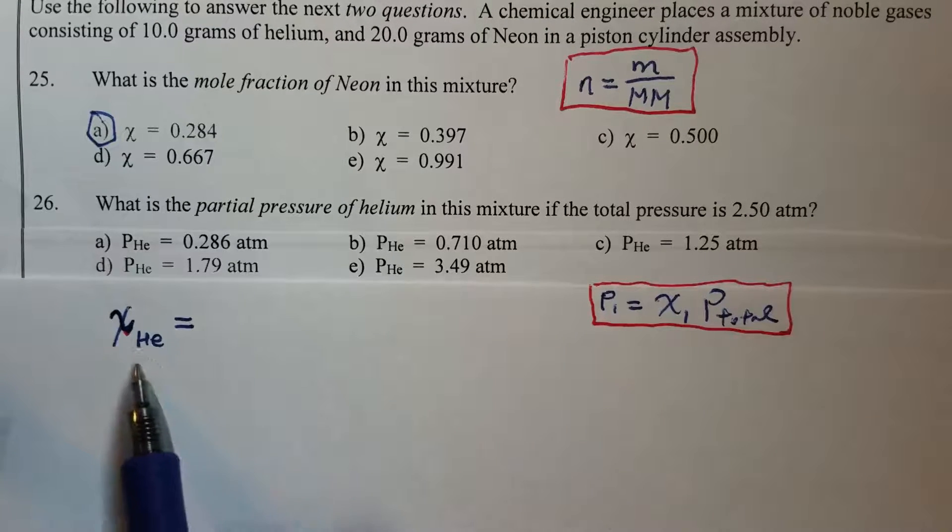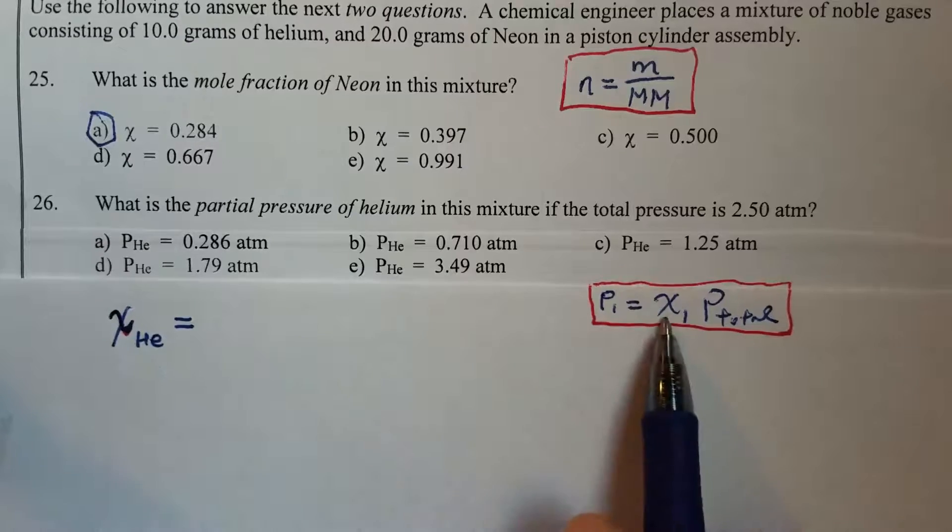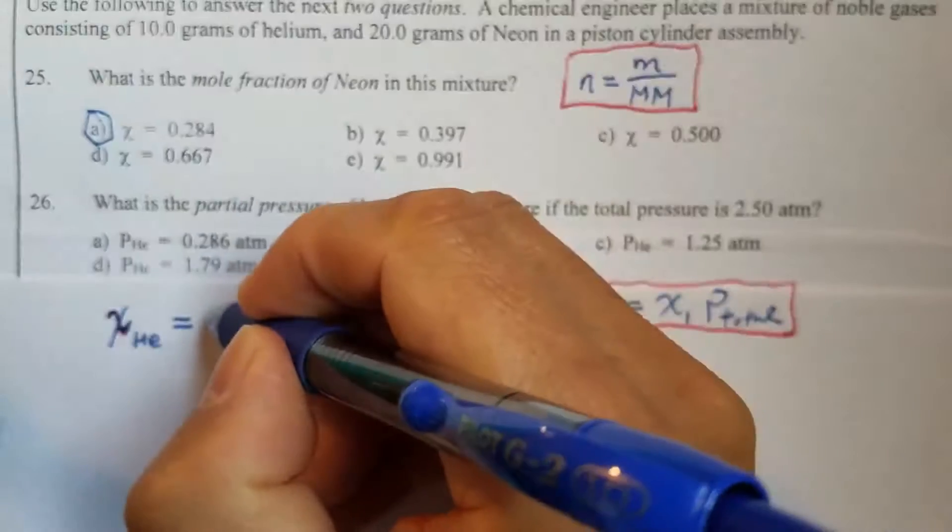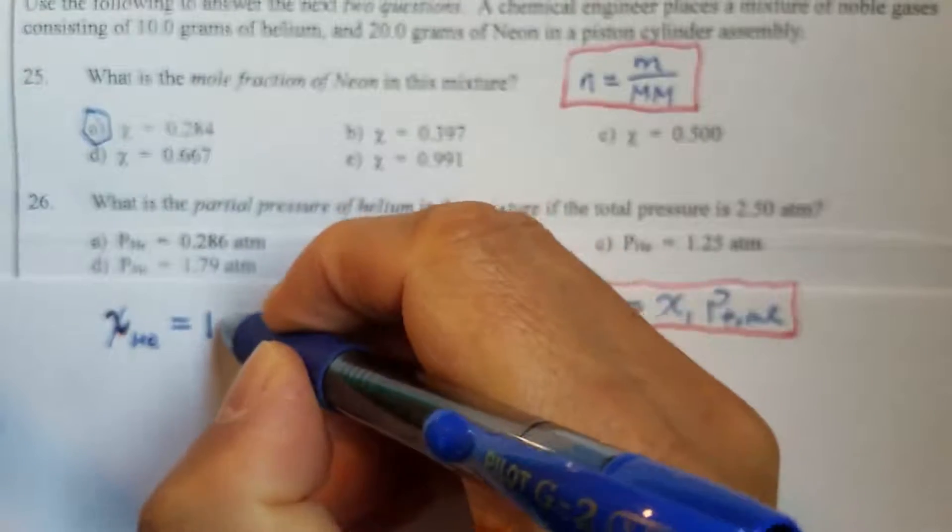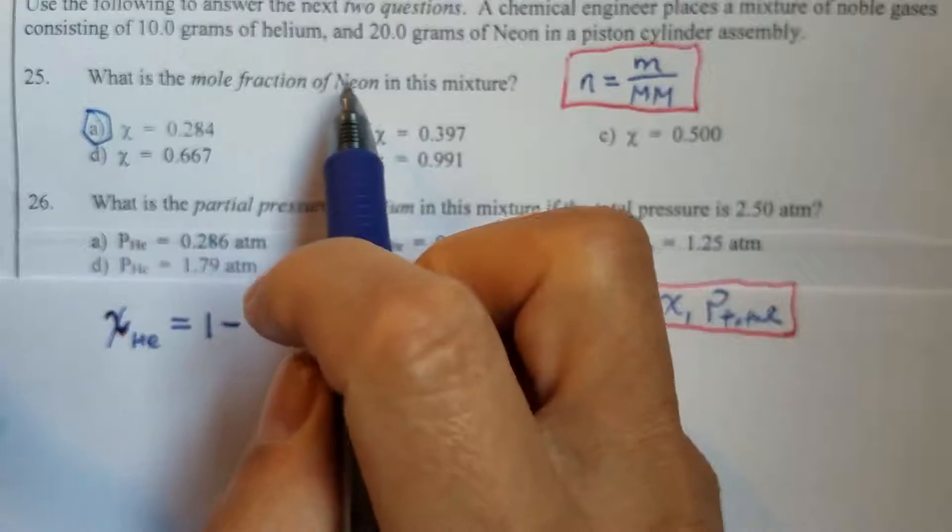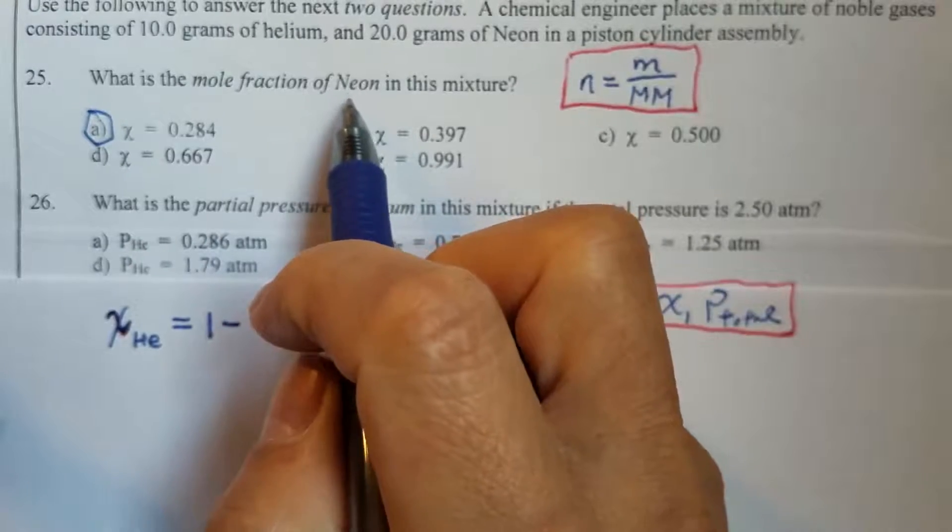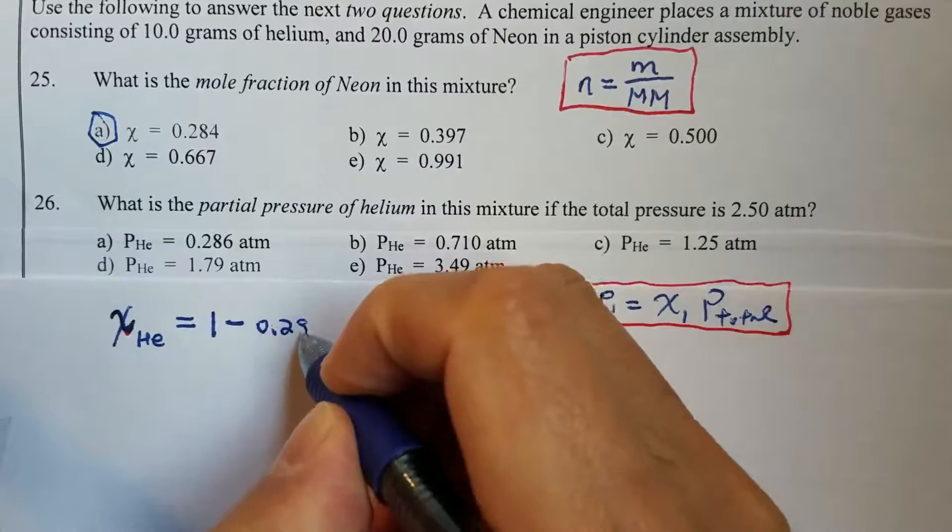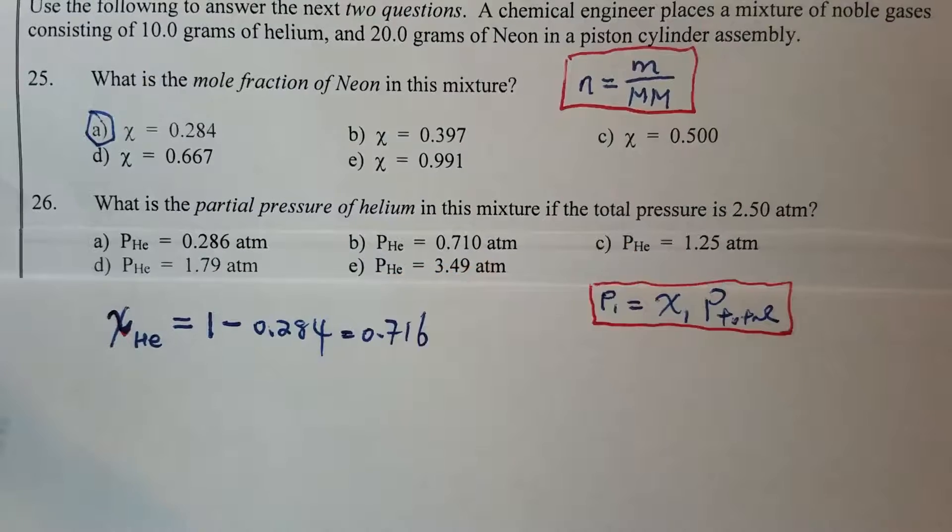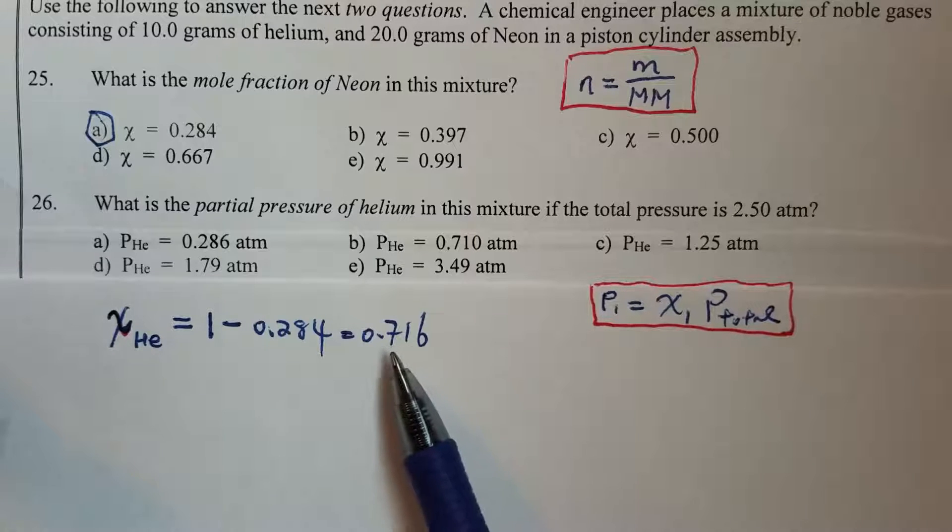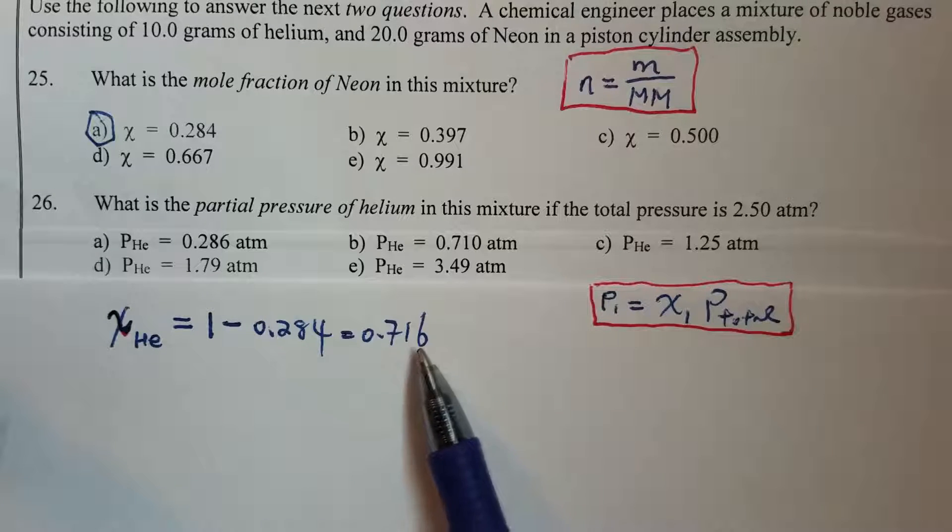So first, we have to find out the mole fraction for helium, and that can be calculated using 1 subtracted by the mole fraction from the other gas, which is neon, and that has 0.284. So the mole fraction for helium is 0.716.